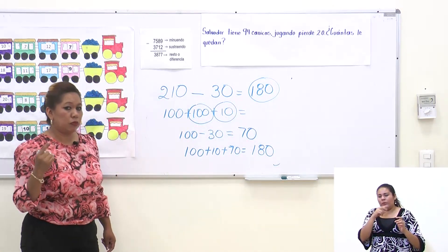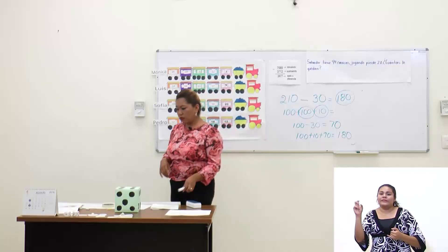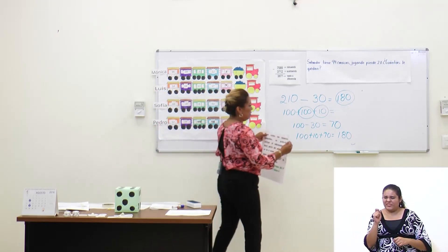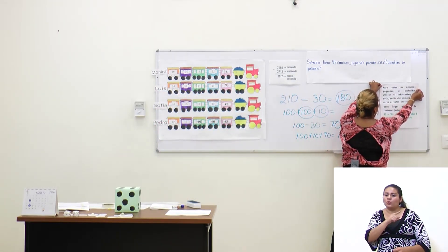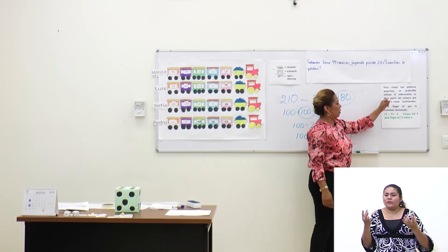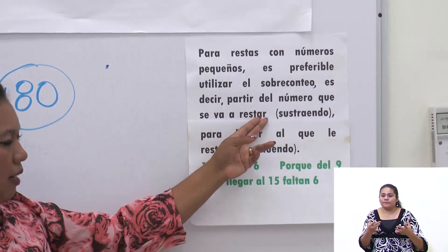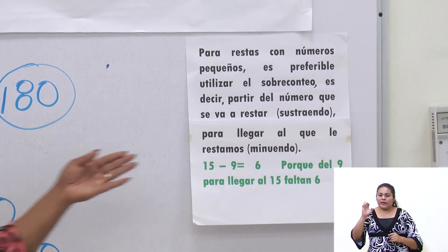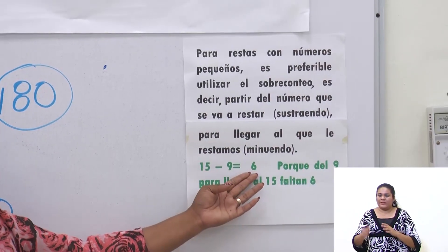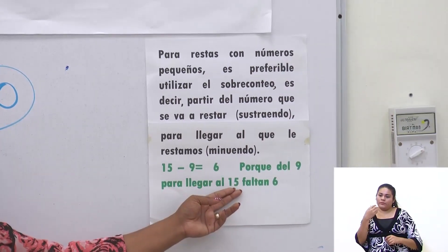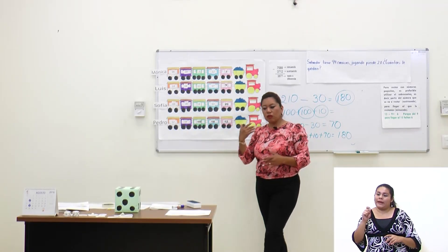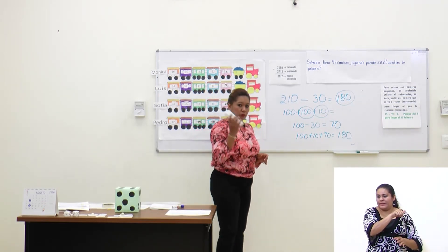Para esto hay algunas reglas que debes conocer. Para las restas con números pequeños, es preferible utilizar el sobreconteo: partir del número que se va a restar, el sustraendo, para llegar al minuendo. Por ejemplo, 15 menos 9 es 6 porque del 9 para llegar al 15 solamente hacen falta 6. Esta estrategia la utilizamos cuando tengamos números menores de 20.